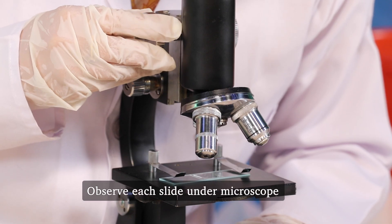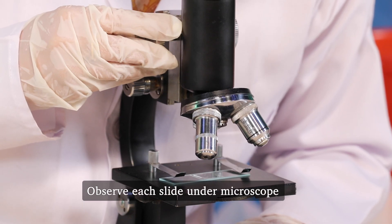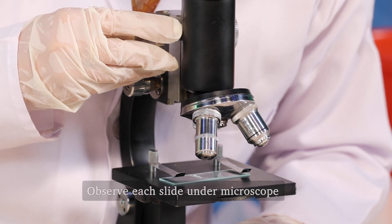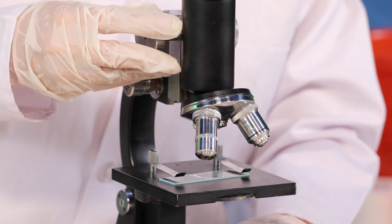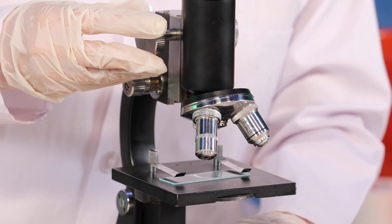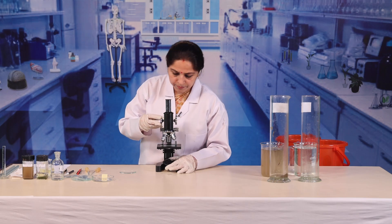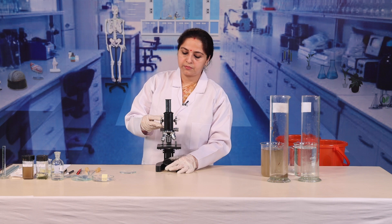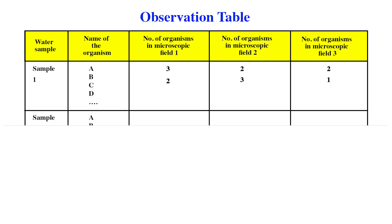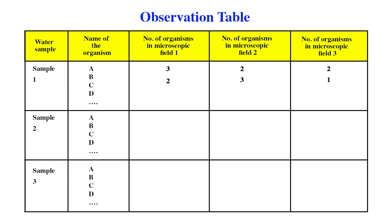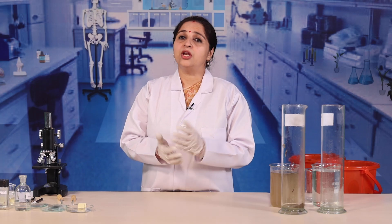Observe each slide under the microscope — first under lower magnification and then under higher magnification. Record the different types of organisms present in each water sample under different fields of the microscope.